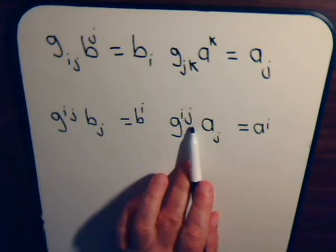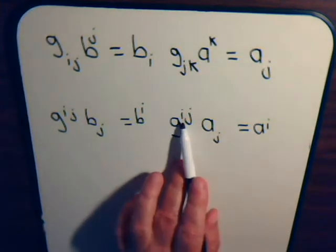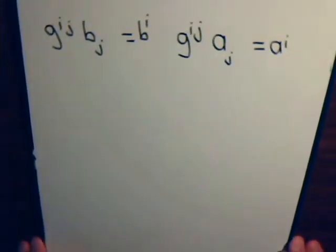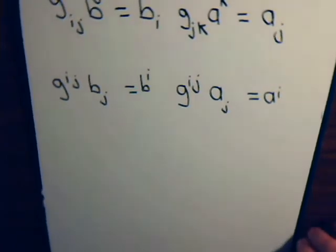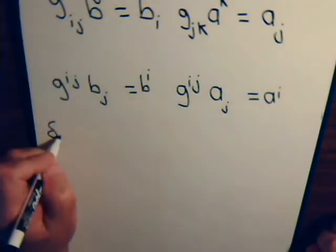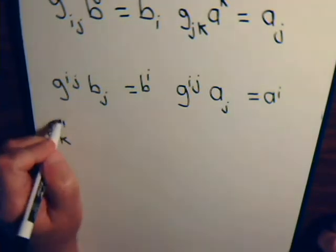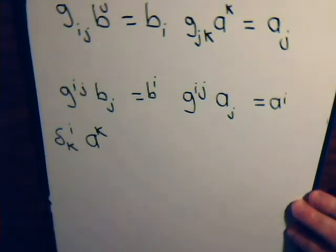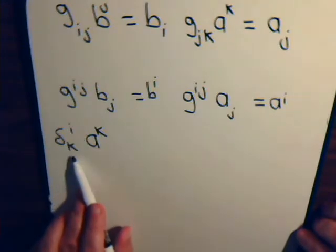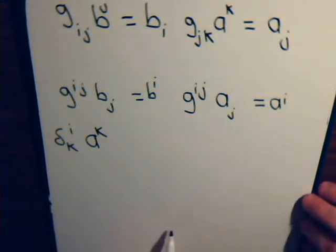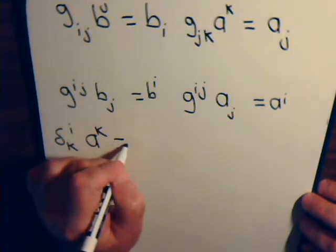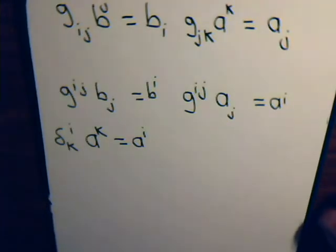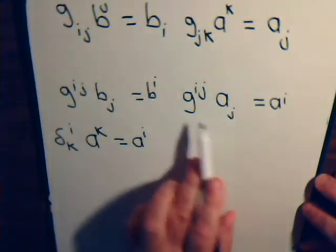Now if we have this situation, the Kronecker delta δ_K^I times A^K. Here this is zero unless K equals I and that equals one, so this equals A^I. But we see we just noticed right here that A^I can be written in this form.